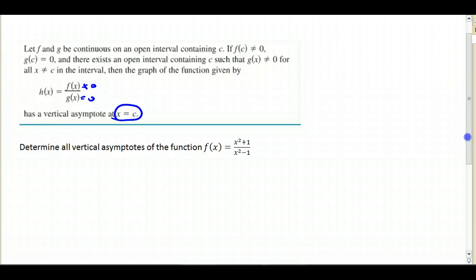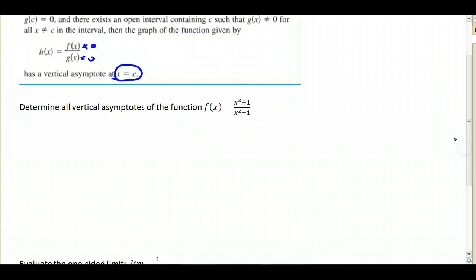So let's do an example. Determine all the vertical asymptotes of this function. To do that, we want to make sure that everything is factored as much as possible. In the denominator, I can factor that. I can't factor the numerator, so nothing is going to cancel.